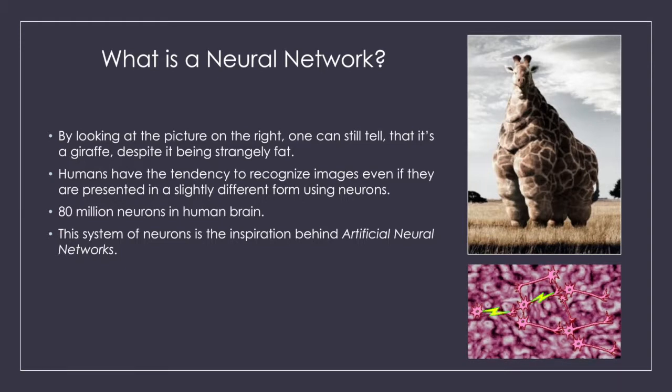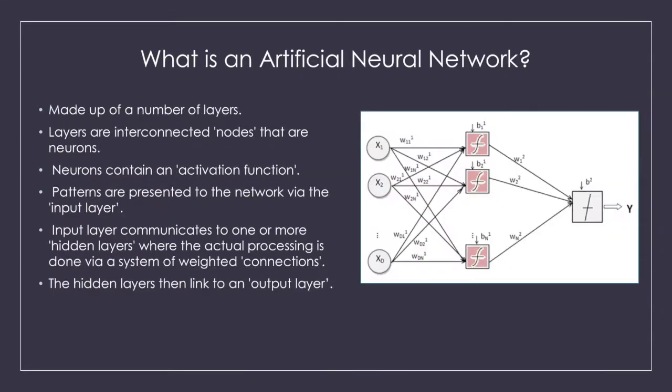This remarkable system of neurons is the inspiration behind artificial neural networks. Neural networks are made up of a number of interconnected nodes that are neurons. These neurons are arranged in form of layers which contain an activation function. Patterns are presented to the network via the input layer, which communicates to one or more hidden layers where the actual processing is done via system of weighted connections. The hidden layers then link to an output layer.